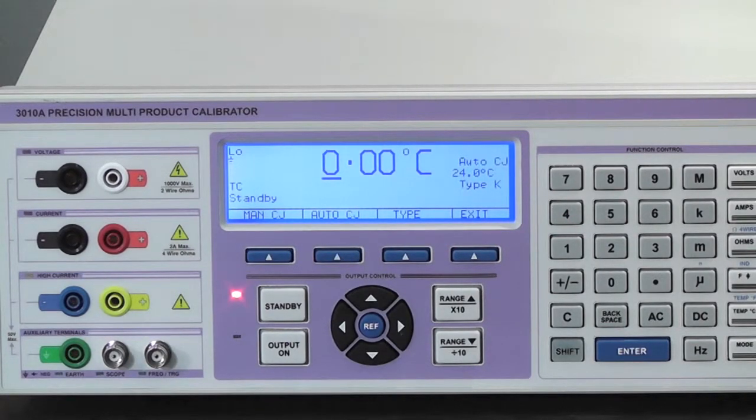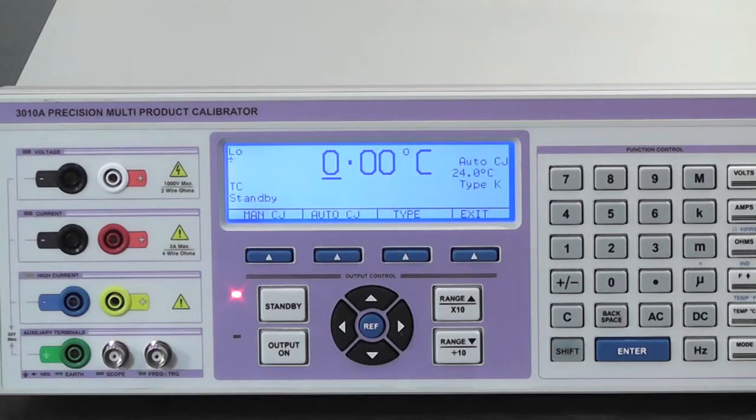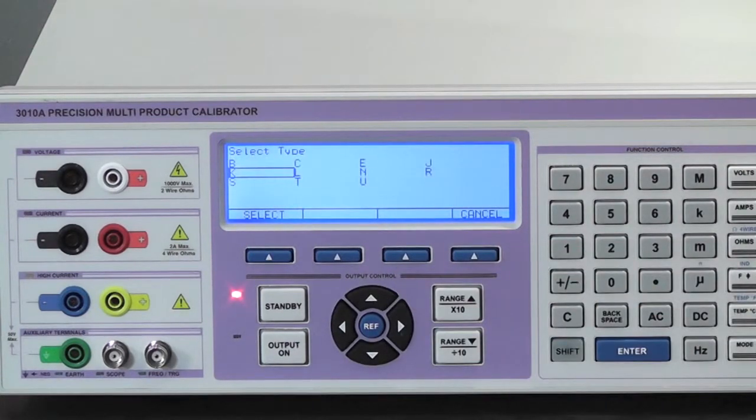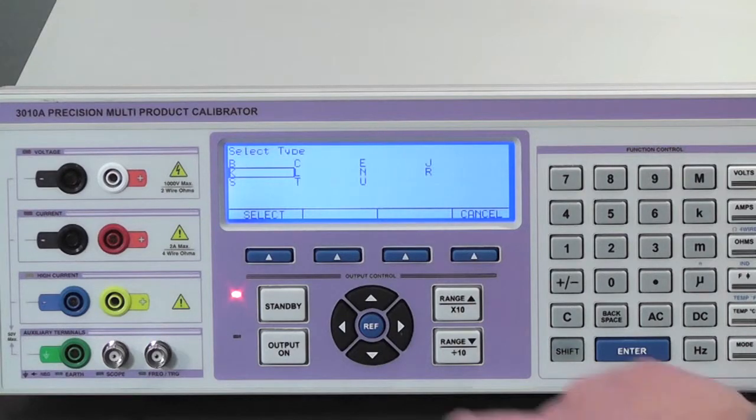To select the thermocouple type press the type soft key. Use the directional keys to select the desired thermocouple, in this case K.